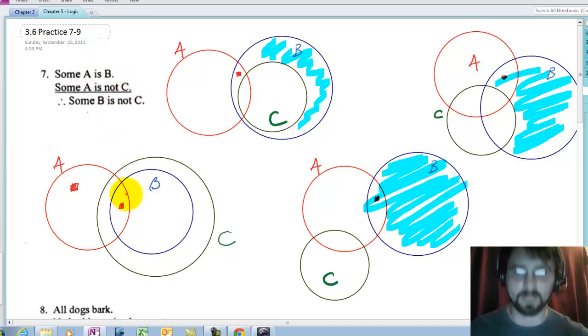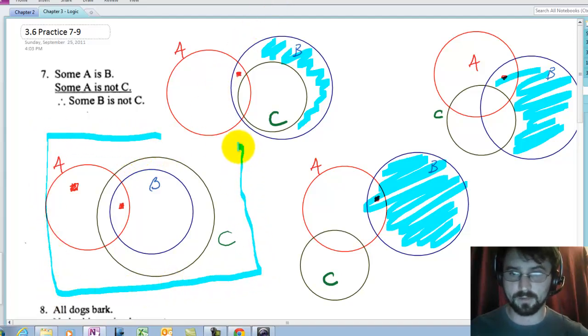It doesn't have to be the same dot. I hope you guys realize. When I say some A is B, that doesn't mean the same A is not C. I have an A that's also a B. I have an A that is not a C. And the question is, do I now have some B that is not a C? And the answer is I do not because B is completely inside of C.